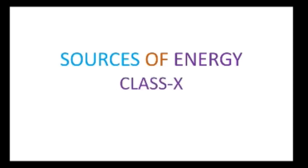If you go to my earlier videos, you can get a clear idea about the class 10 electricity chapter. From there you can get the definition of current, potential, resistance, resistivity, their relation, electric energy, electric power, and some numericals. You just go through that and you will get the idea about the electricity chapter. Now here we will talk about different types of energy and their sources.